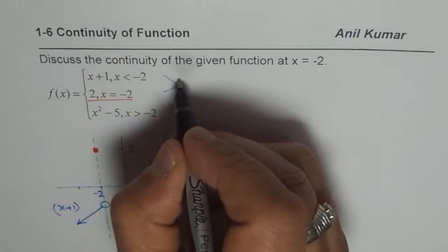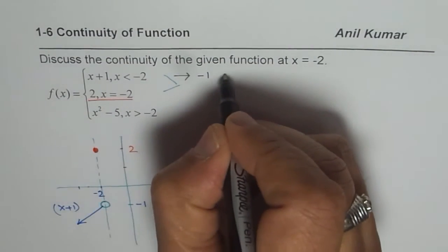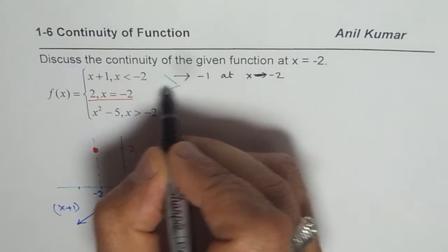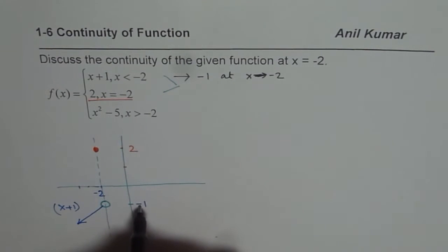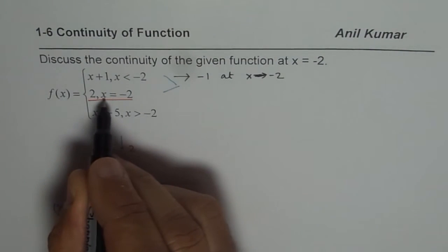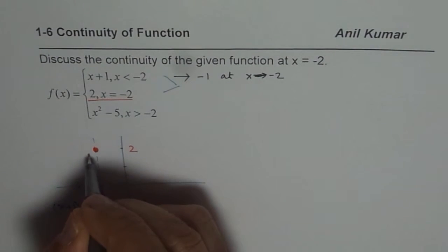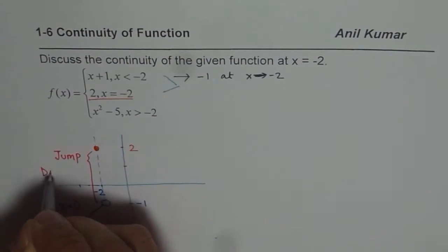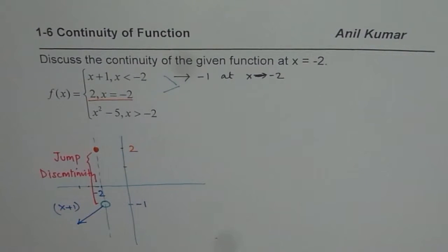This function approaches minus 1 as x approaches minus 2. We cannot be at minus 2 since it is less than minus 2. So when you go closer and closer, you are approaching minus 1. In this case, this function is only defined at minus 2 and its value is 2. So there is a gap here. All this gap is called jump discontinuity.